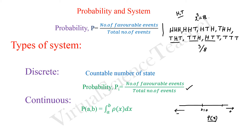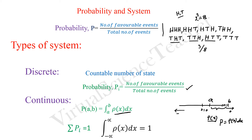The probability of finding the particle at position x over a small length dx is P = ρ(x) dx. To find the total probability between a and b, we integrate: P = ∫ from a to b of ρ(x) dx. Since total probability equals 1, for a continuous system where the variable ranges from minus infinity to plus infinity, we have ∫ from −∞ to +∞ of ρ(x) dx = 1.